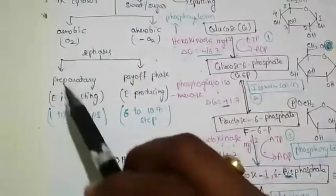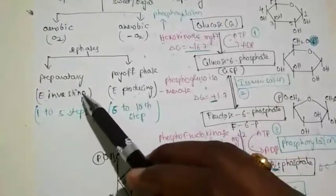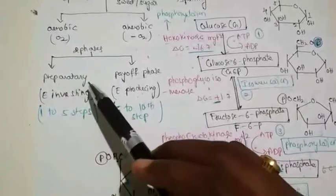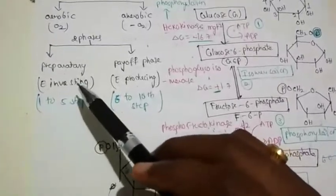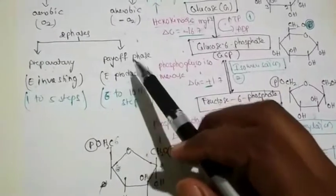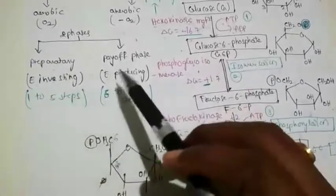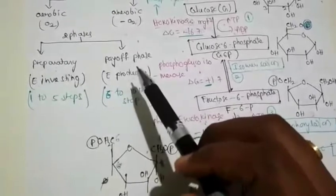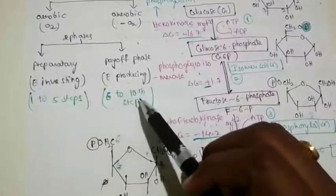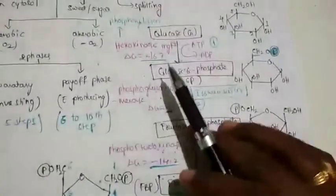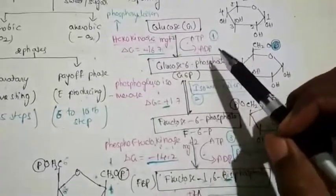In the preparatory phase, energy is invested or utilized, so it is called the preparatory phase — we are preparing the glucose molecule for breakdown. The second phase is the payoff phase, where energy is produced. The first step to fifth step is called the preparatory phase, and the sixth step to tenth step is called the payoff phase. Glycolysis takes place in a total of ten steps.